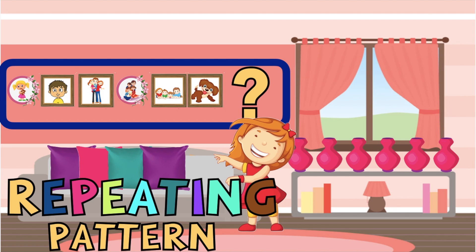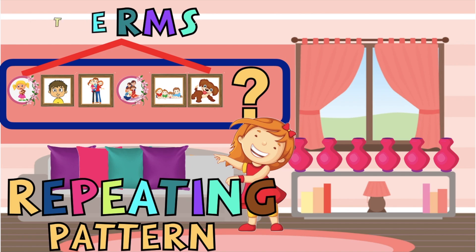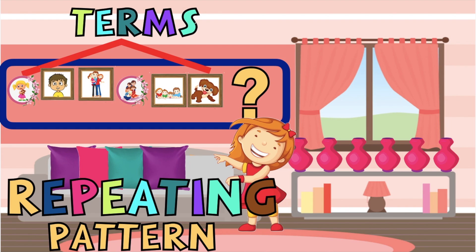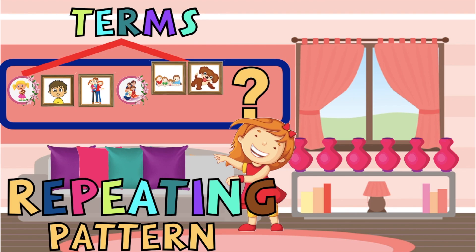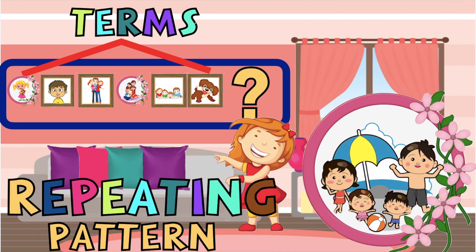The items in a pattern are called terms. It is easy to predict what comes next in a given pattern. In the set of picture frames, the pattern shows one circle frame followed by two squares, then one circle frame followed by two squares. What do you think is the next term? That's correct — we're going to have a circle frame.